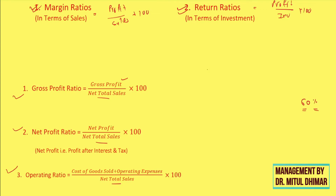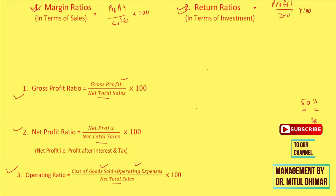As the numerator for operating ratio, we take expenses that are incurred for operating a business. The biggest operating expense is purchases, so we put cost of goods sold in the formula — that tells us the amount of purchases used during the period — along with other operating expenses that occur at the factory level, office level, and sales level.